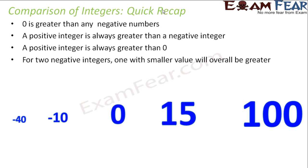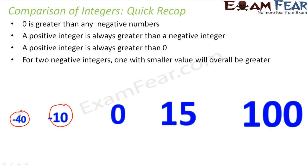For two negative integers, the one with the smaller value will overall be greater. For example, if you compare minus 40 and minus 10 — if you only consider the values 40 and 10, which is smaller? 10 is smaller. But overall, when you consider the sign, you would see that minus 10 is greater. So when you are comparing two negative integers, the number with a smaller value will overall be a greater number. So out of minus 40 and minus 10, 10 is the number with the smaller value, but overall minus 10 is greater. If you remember these four rules, it's very simple to compare two integers.